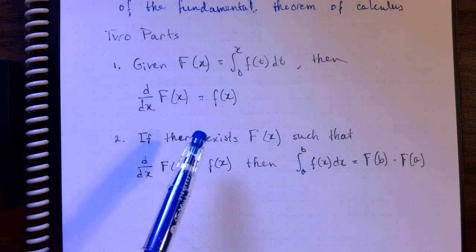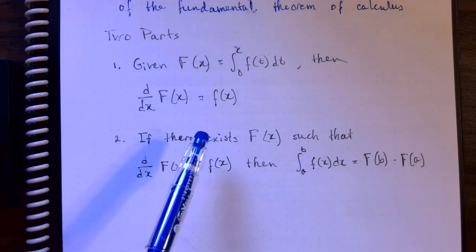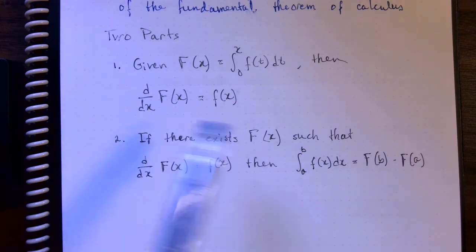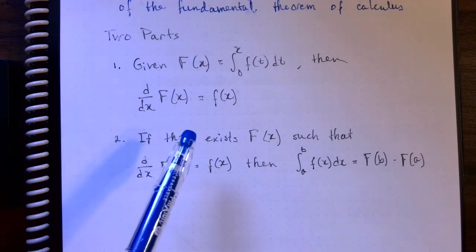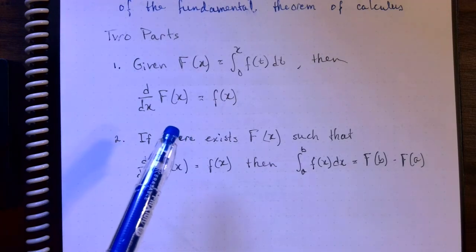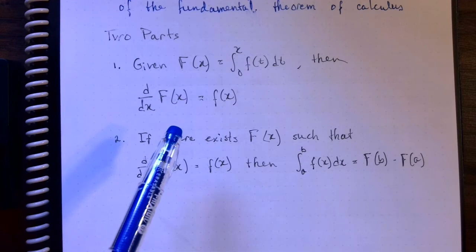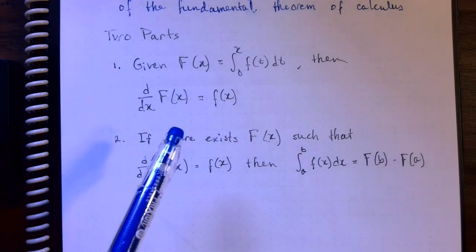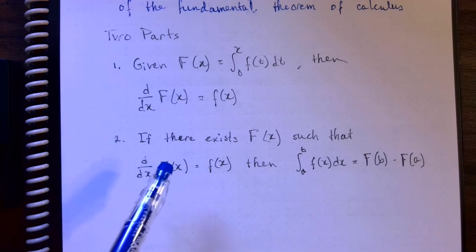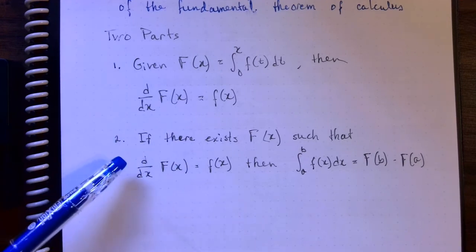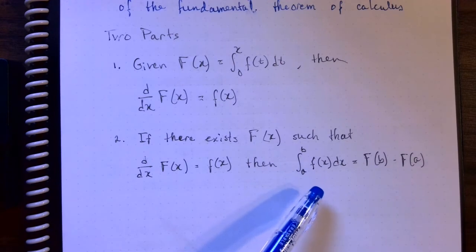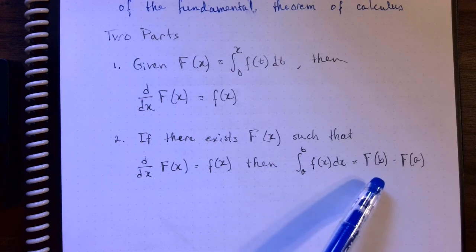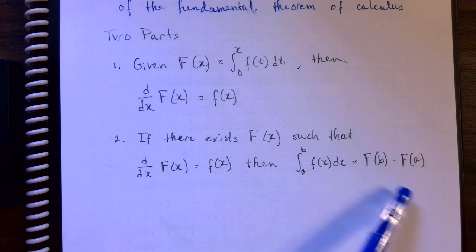In Isaac Barrow's collection of lectures on geometry, he has this theorem relating differentiation to integration. In a preface to several examples of using this theorem, he mentions that he got some help from a quote-unquote friend, and that friend actually happens to be Isaac Newton. The second fundamental theorem of calculus is the one we use most often when evaluating a definite integral — basically, you can evaluate it by constructing an antiderivative and then evaluating the antiderivative at the endpoints.